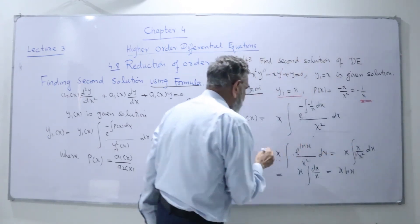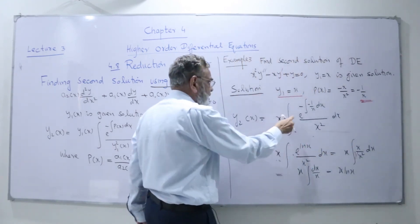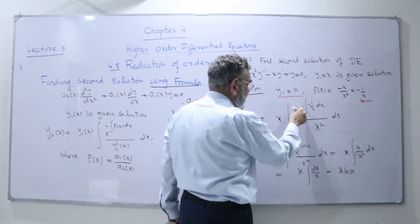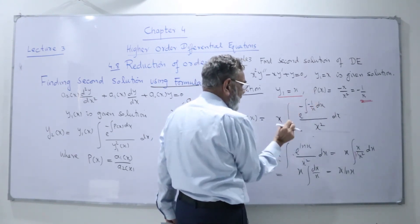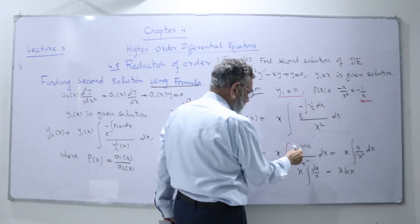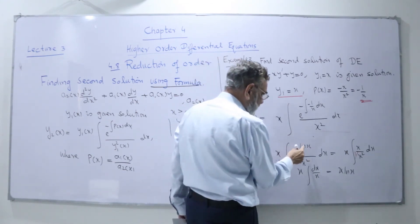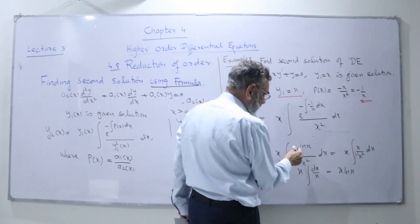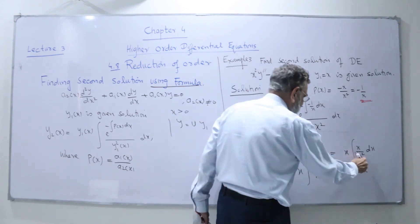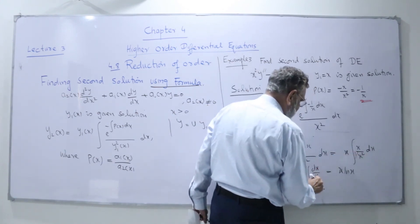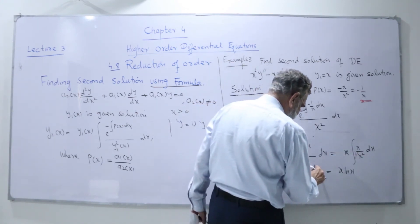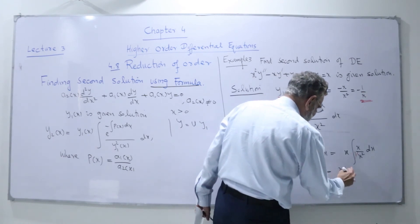We substitute there and get x times the integral of e to the power of minus (minus 1 upon x) dx over x squared. The minus signs cancel, giving us the integral of 1/x, and the integral of that is ln(x). Then ln and e cancel, giving us x. So x cancels with x squared, leaving dx upon x, and the integral of dx upon x is ln(x).